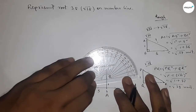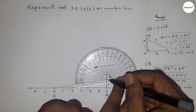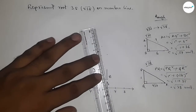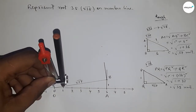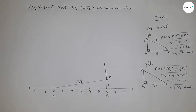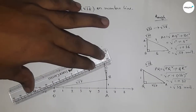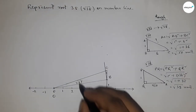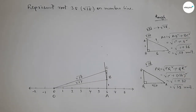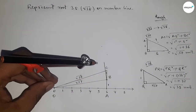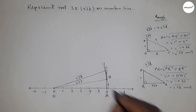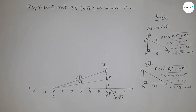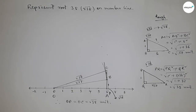Applying this concept on the number line: draw a 90 degree angle at point B using a protractor to get a perpendicular line. Take one unit length by compass and mark point C. Join B to C — this gives BC equal to one unit. Join O to C, so OC equals root 38 units. Now take length OC by compass and draw an arc that meets the number line at point P. This point P is the representation of root 38 on the number line, and distance OC equals OP equals root 38 units.